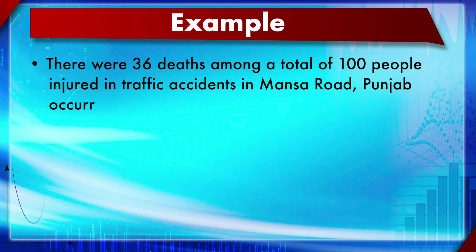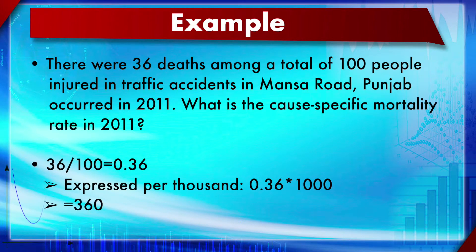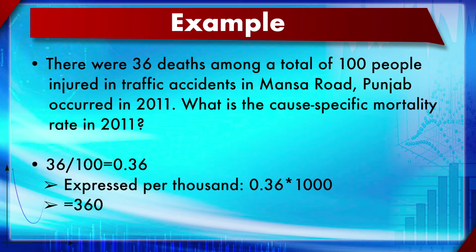Example: There were 36 deaths among 100 people injured in traffic accidents in Manchester Road, Batinda, Punjab in 2011. What is the cause-specific mortality rate for 2011? Since the cause is traffic accidents, this is a cause-specific mortality rate. The calculation is 36 divided by 100 equals 0.36, which expressed per 1,000 is 360 - indicating that traffic accidents are extremely common there.